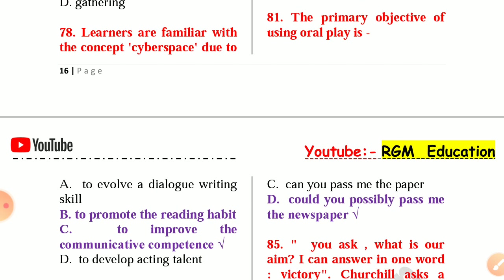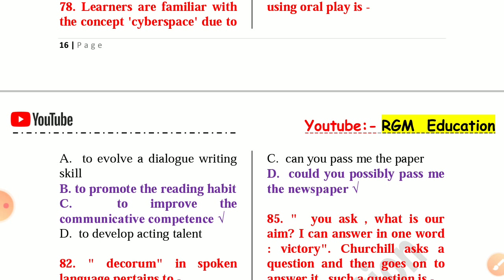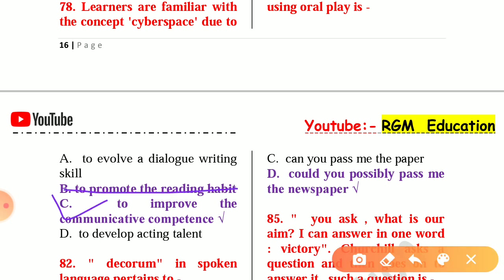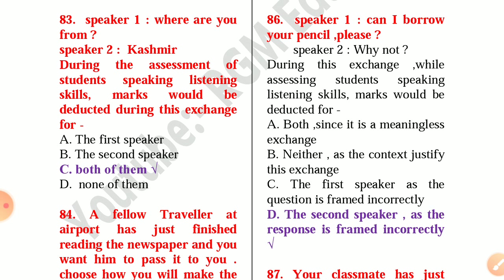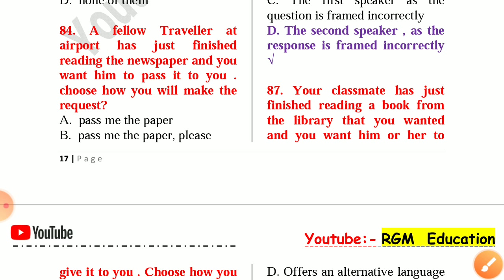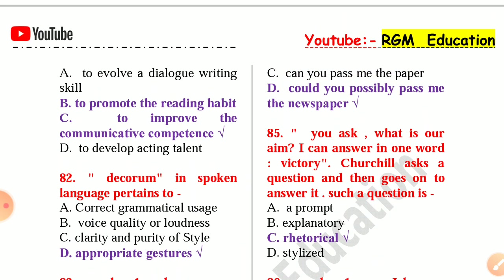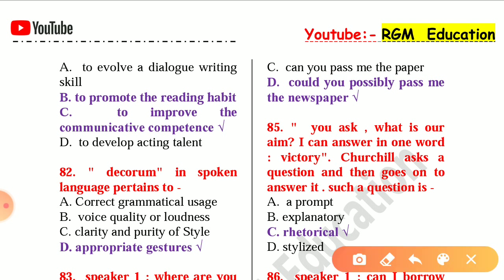Question 80: The primary objective of using oral play — the correct answer is C, not B — is to improve communicative competence. Question 81: Decorum in spoken language pertains to appropriate gestures. Question 82: Speaker 1 says 'Where are you from?' and Speaker 2 says 'Kashmir.' During the assessment of student speaking and listening skills, marks would be deducted for both speakers. Question 83: A fellow traveller at the airport has just finished reading the newspaper and you want him to pass it to you. The correct request is: 'Could you possibly pass me the newspaper?'